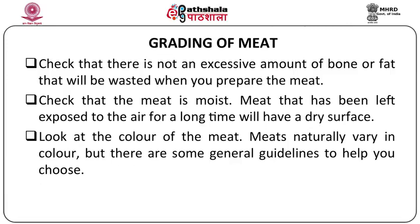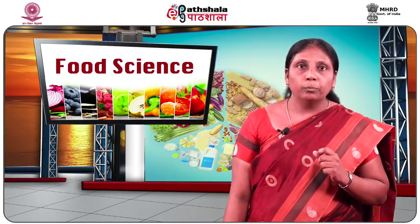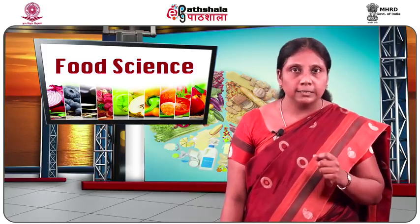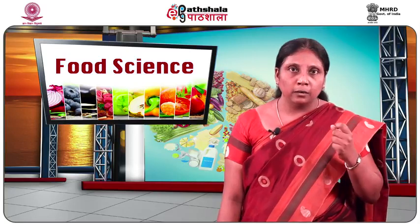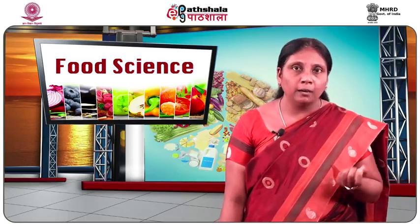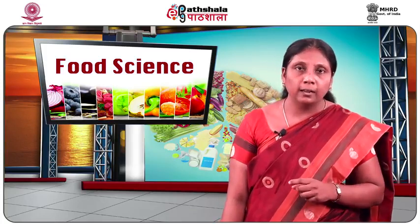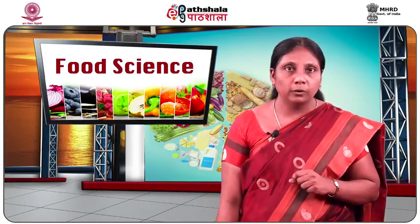Check that the meat is moist. Meat that has been left exposed to the air for a long time will have a dry surface. Look at the colour of the meat. Meats naturally vary in colour but there are some general guidelines that will help you to choose. Myoglobin, a protein responsible for the red colour of the meat, is fixed in the muscles of the animal, and when it combines with oxygen it becomes oxymyoglobin and produces a bright red colour.